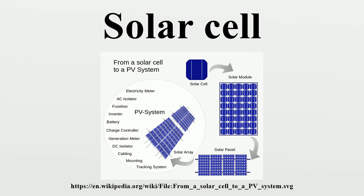The operation of a photovoltaic cell requires three basic attributes: the absorption of light, generating either electron-hole pairs or excitons; the separation of charge carriers of opposite types; and the separate extraction of those carriers to an external circuit.